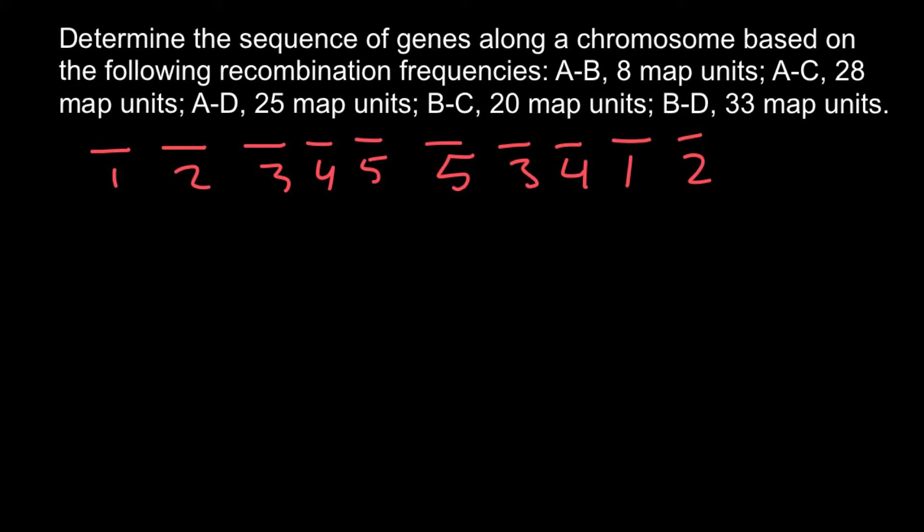The second hint would be that we have to start plotting gene sequence from the longest fragment. And here the longest fragment would be fragment BD - Gene B and D, that separates 33 map units. So let's do it: Gene B and Gene D, 33 map units between these two genes, or we also can say 33 centimorgans.